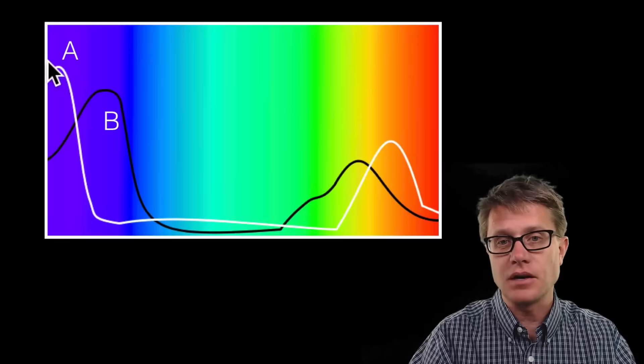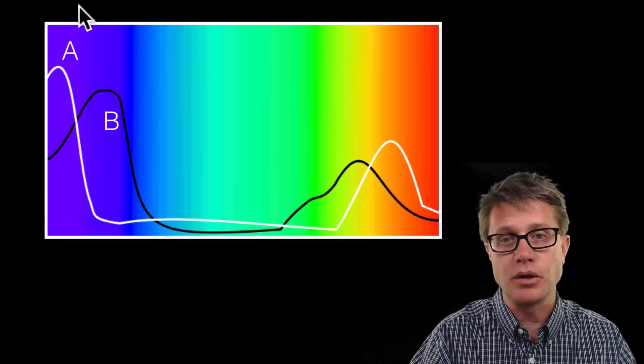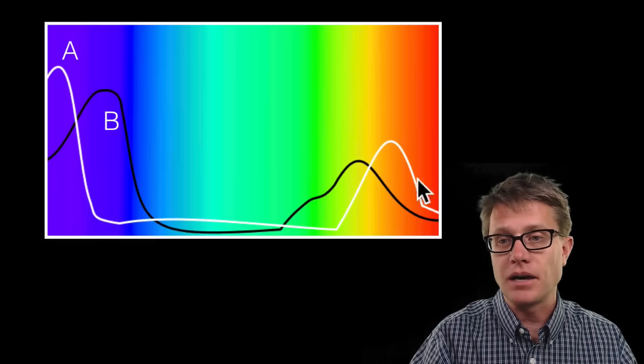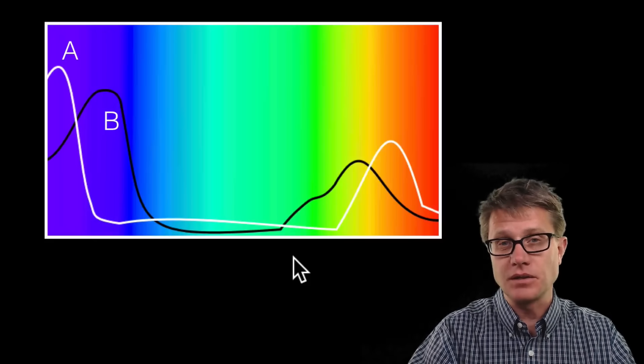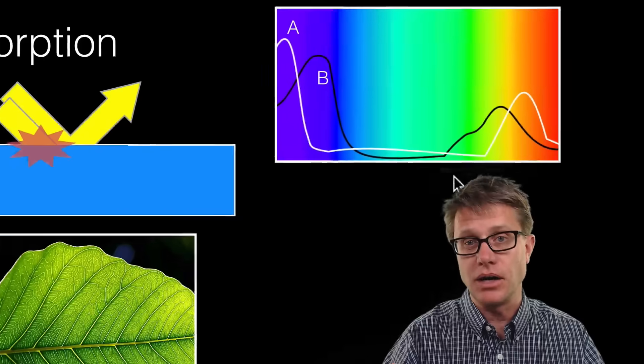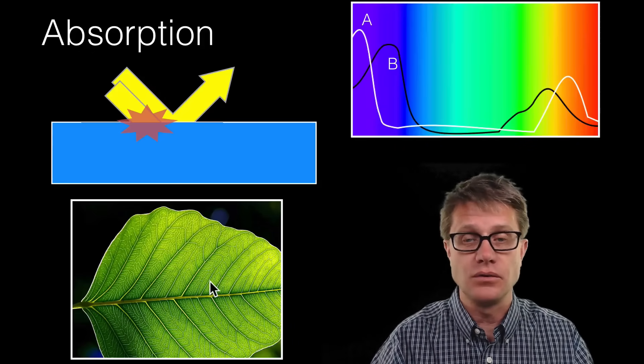We can even look at an absorption spectrum of the leaf itself. There are two pigments in there, chlorophyll A and B. And what they do is they absorb a lot of that bluish, purplish light. They absorb a lot of the reddish, yellow light. But they do not absorb a lot in the green, and that's because the green is reflected back to us. Now what's neat is a leaf can actually make use of that energy to do photosynthesis.